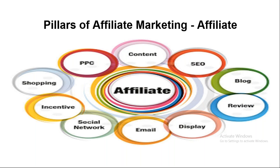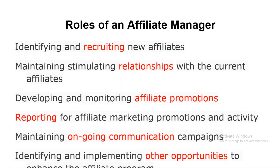From the affiliate marketing point of view, once you have the affiliate link ready and you have selected the right product to promote, you can promote that product through content marketing, PPC, shopping, incentives, social networks, email marketing, display marketing, review websites, blog websites, or SEO. All these are digital marketing channels — the major digital marketing channels — and you can use them to promote your affiliate link. If you are using all these channels, you can make good sales, and if you are making good sales, you can earn good commission.